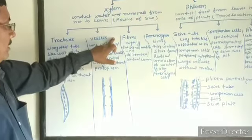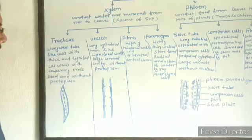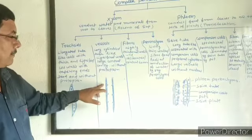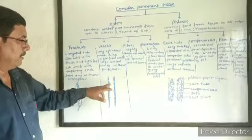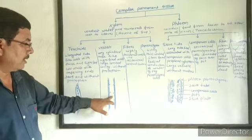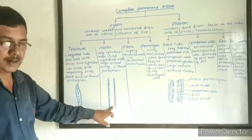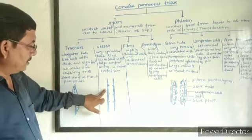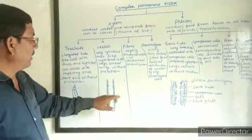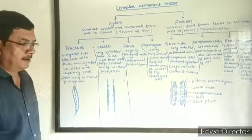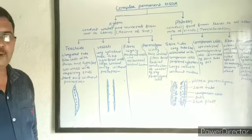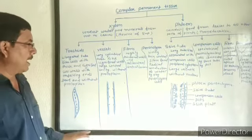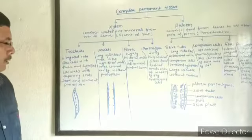The next xylem element is vessels. Vessels are long cylindrical tube-like structures. The cells are placed longitudinally one above the other; the separating wall of cells dissolves and all cells form a tube-like structure. The cell wall is lignified — that means a thick cellulose layer followed by a layer of lignin. Vessels have a large central cavity and lack protoplasm, making them very long cylindrical tube-like lignified structures.